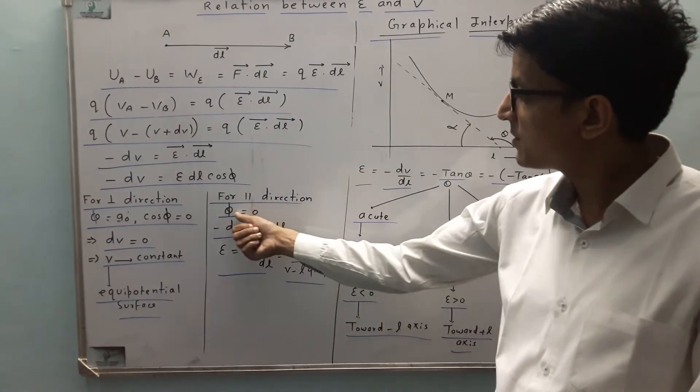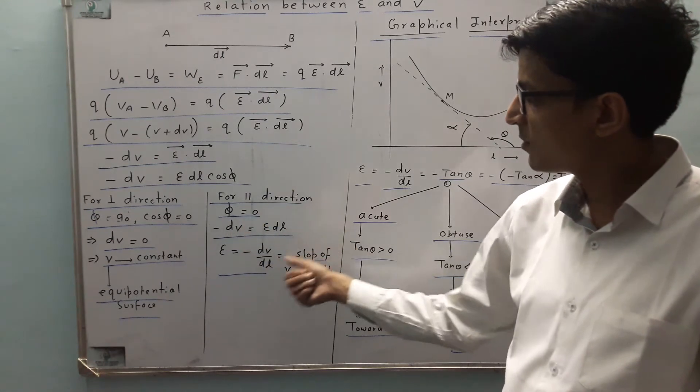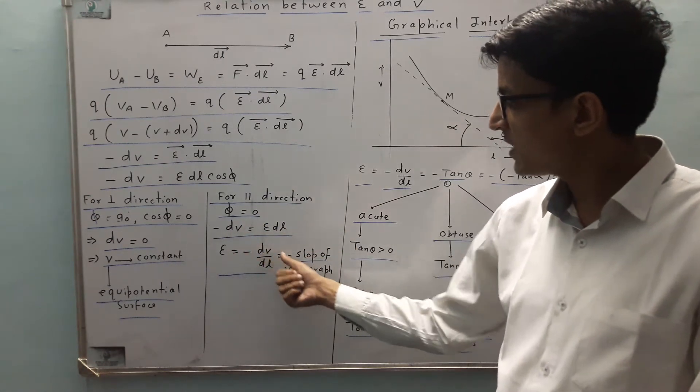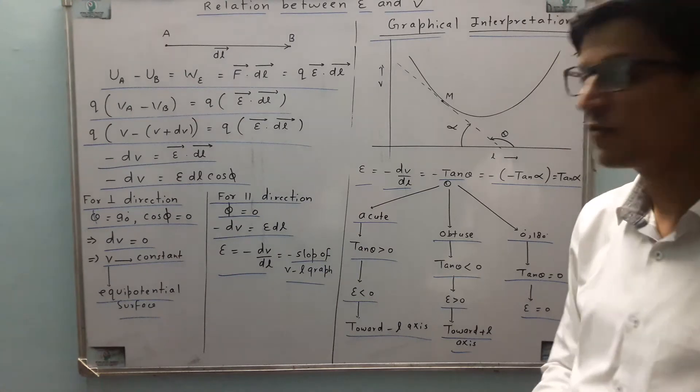For parallel direction, phi is zero. So minus dV equals E DL. E is minus dV by dL, which is the negative slope of the V-L graph.